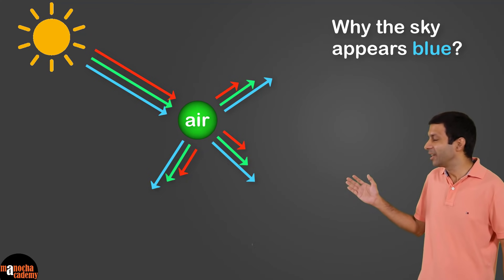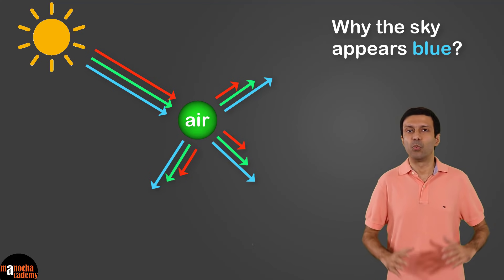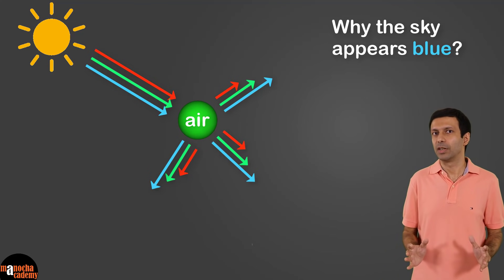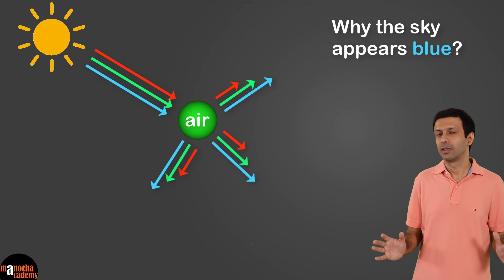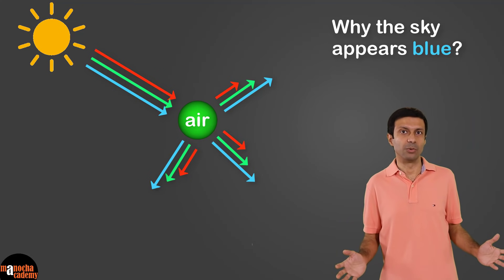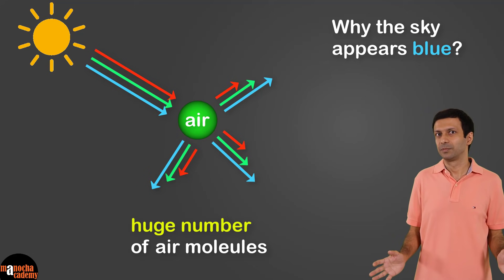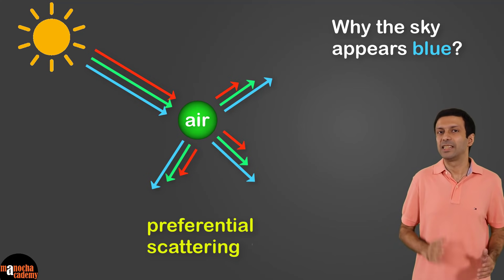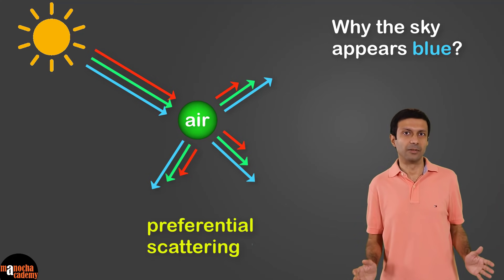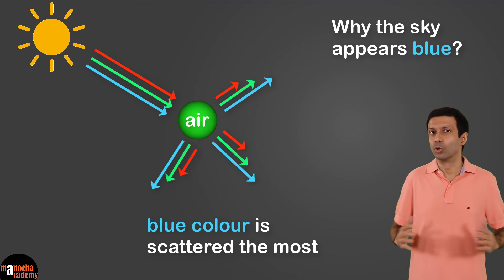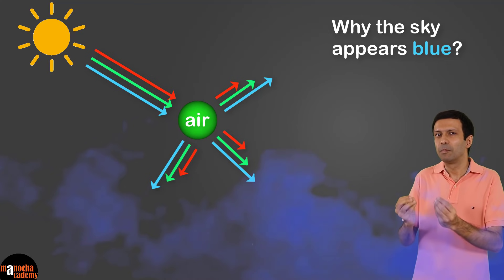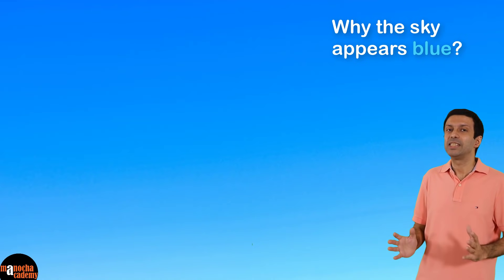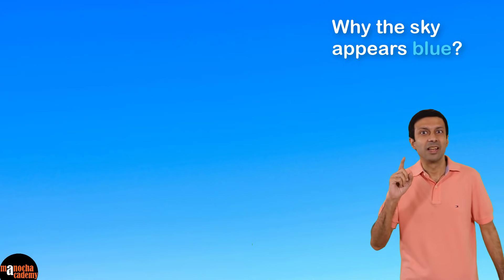So are you getting a clue why the sky appears blue? We know sunlight is white, made up of all seven colors. When sunlight enters the atmosphere, it is scattered by the trillions of air molecules present. Each air molecule does preferential scattering — scattering blue color more than red and green. So blue color is scattered the most; it's like the air molecules are playing with blue-colored powder and scattering it all around. So whenever we look up at the sky, we see blue color — that's why the sky appears blue.